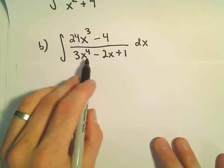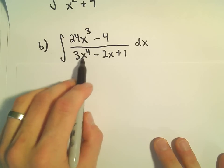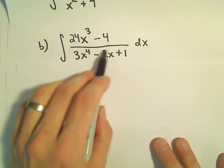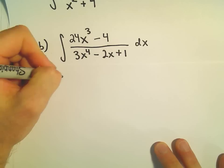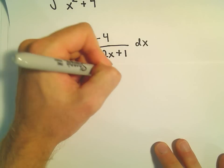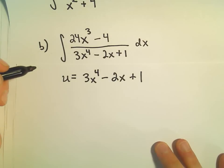I'm going to do the same thing here. I notice we have an x to the fourth in the denominator, so if I take the derivative of that, I would get something cubed. And then we have an x to the first. If I take the derivative of that, I'm just going to be left with a constant. So hopefully, by picking u to be the denominator, we can manipulate it so that our u substitution will work.